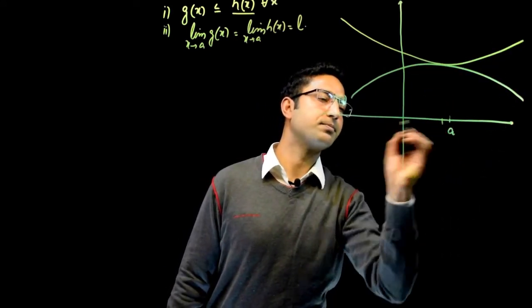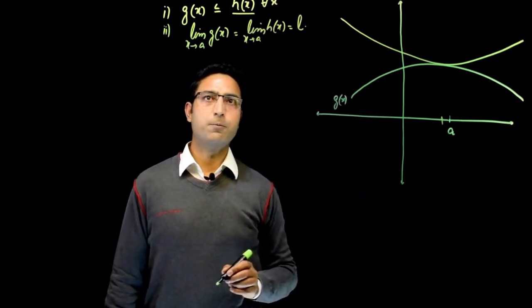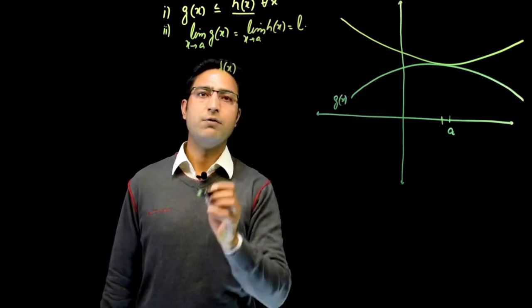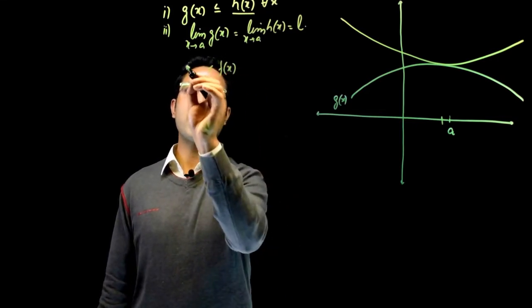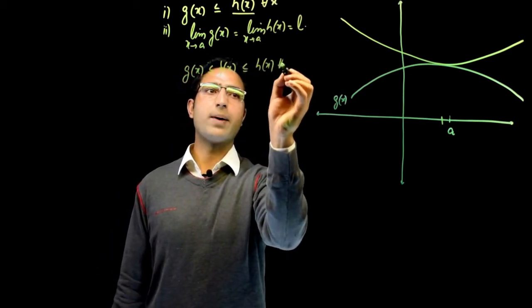Then the graph h(x) will lie above the graph of g(x) because h(x) is greater than or equal to g(x) for all values of x. But at the point a, these graphs have to meet because their limits are same at the point a. So the graph of h(x) will be something like this.